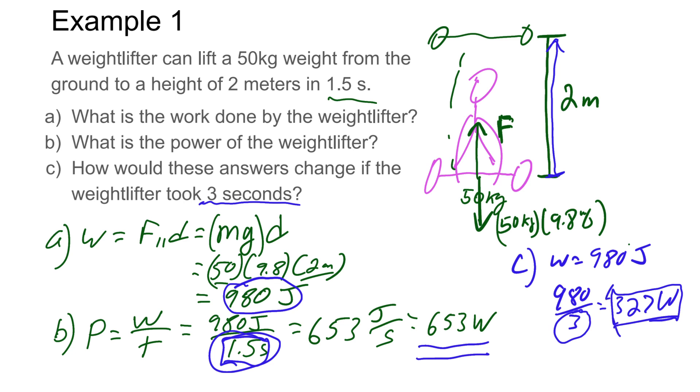What if we took that first weightlifter with this power of 653, and we have them lift half the weight? So maybe instead of 50, they're lifting 25 kg. Well, they should theoretically be able to do it in half the time because their power has not changed. They can do less work faster.